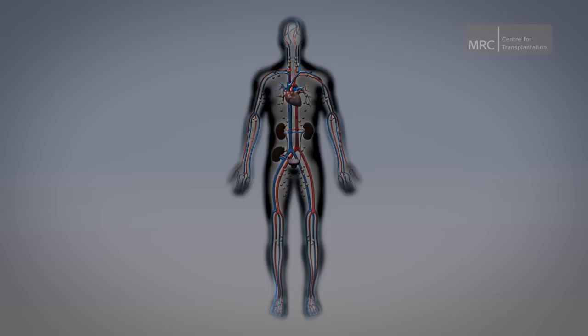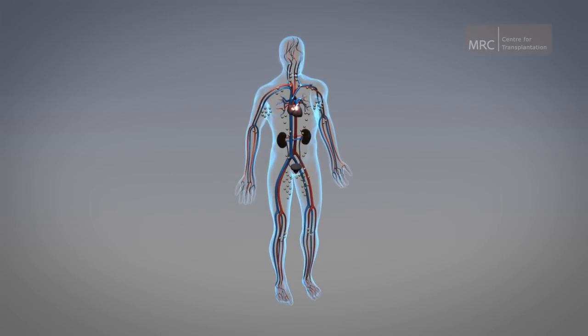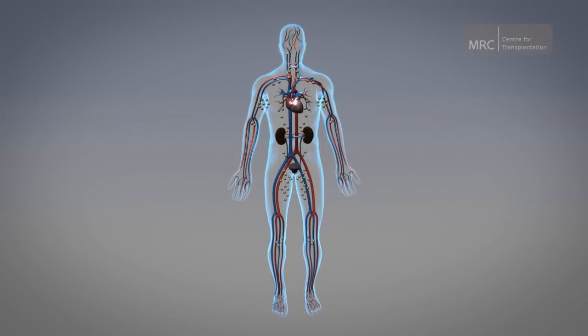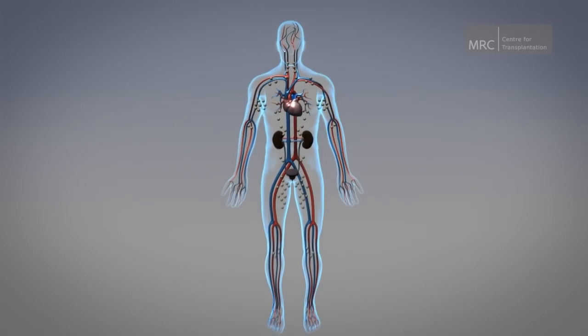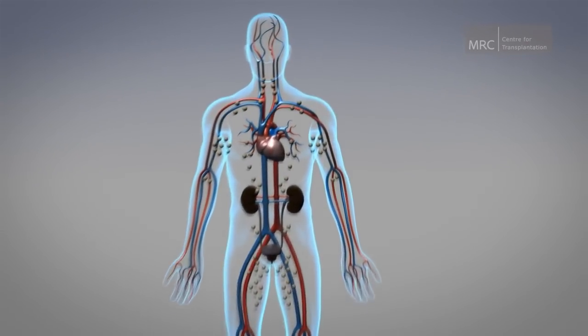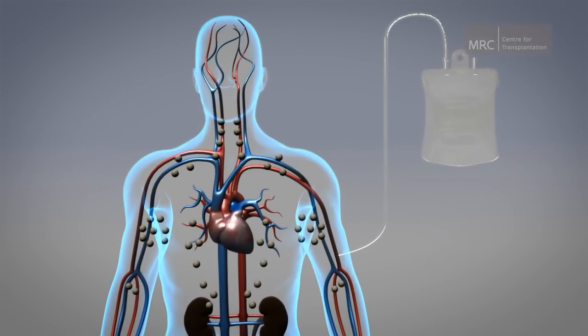The team at King's College London have developed a way to harness the power of the immune system whilst maintaining the body's capacity to resist infectious diseases. A large sample of blood is taken from the recipient of an organ before the transplant has taken place.